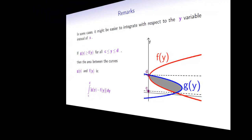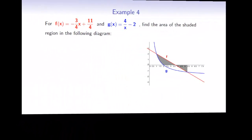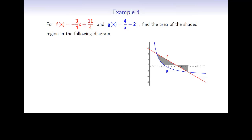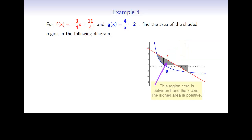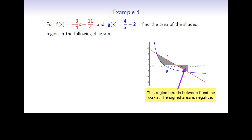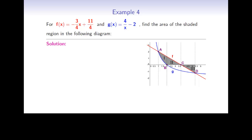Now let's move on to our next example. For f(x) equals negative 3/4 x plus 11/4 and g(x) equals 4 over x minus 2, find the area of the shaded region in the following diagram. Parts of the region are between f and g, and other parts are between f and the x-axis. Part of the region is above the x-axis, and the other part is below. So we decide to split the region into three different parts, and calculate the area of each part separately.